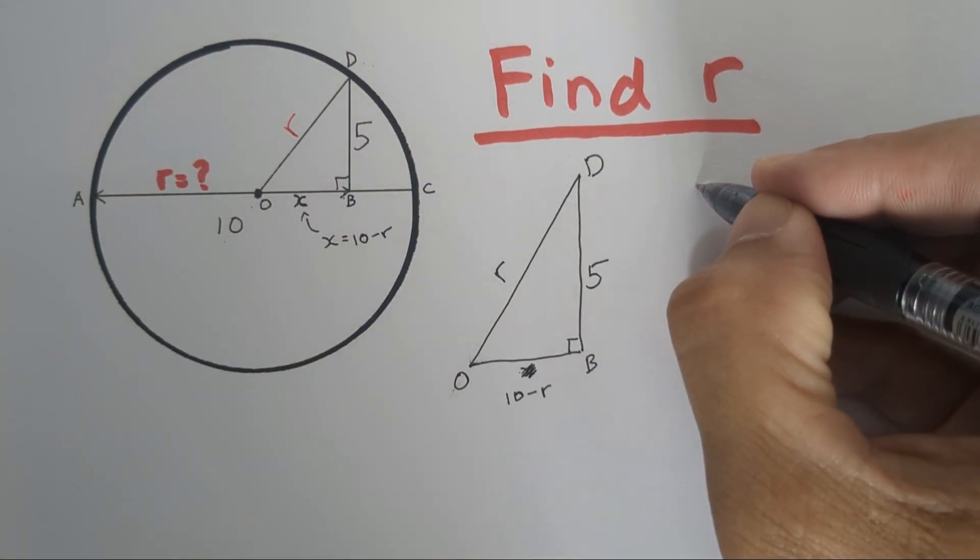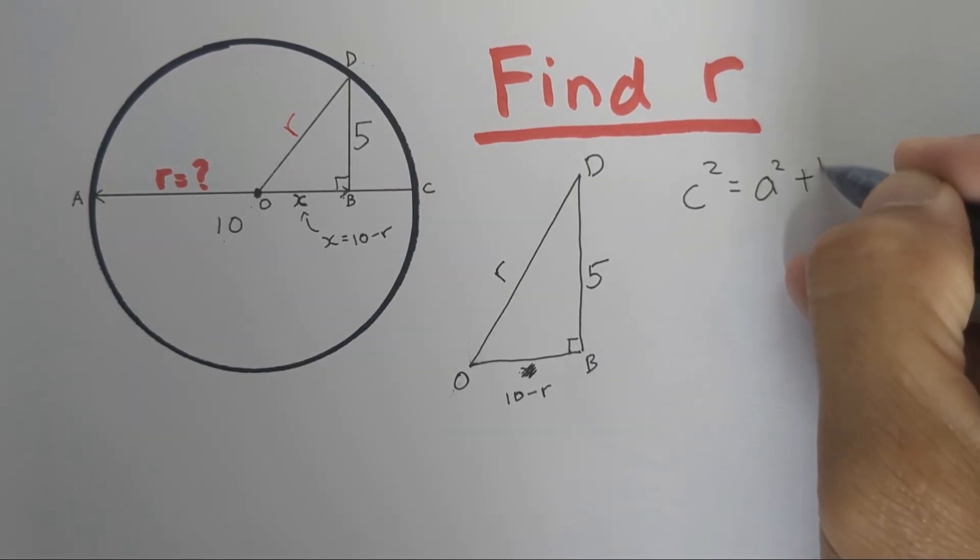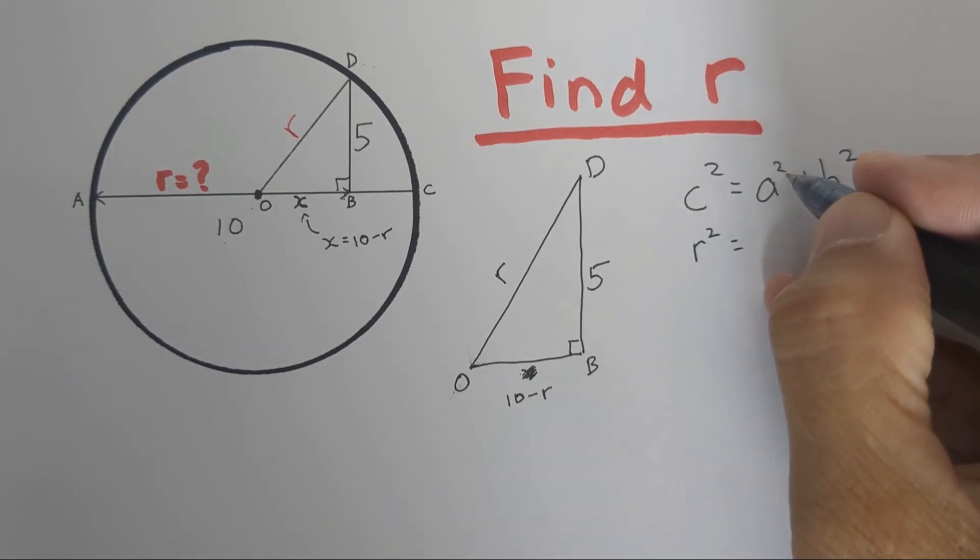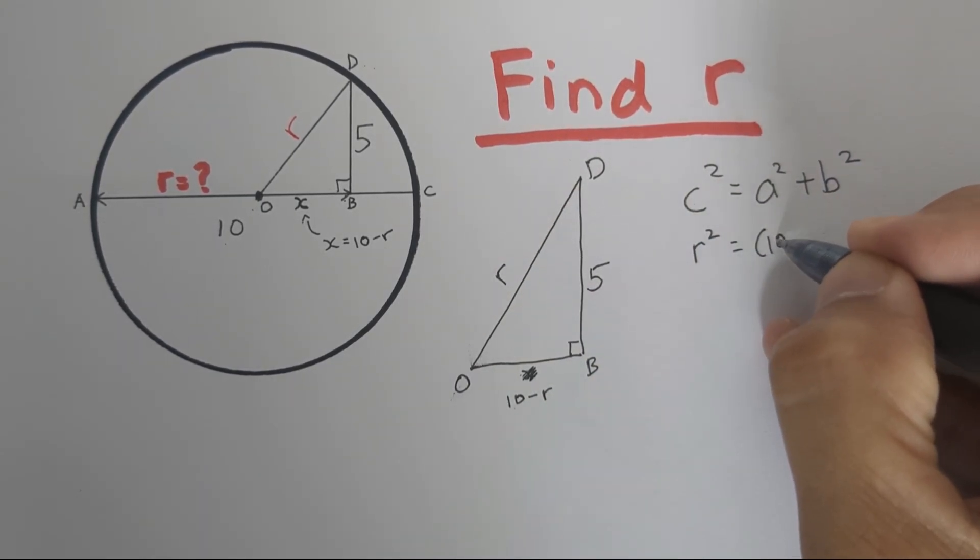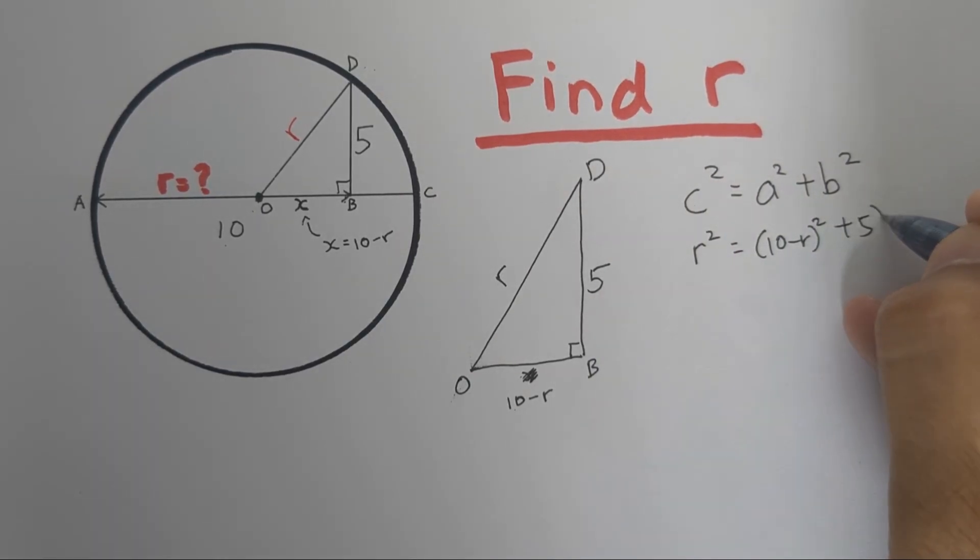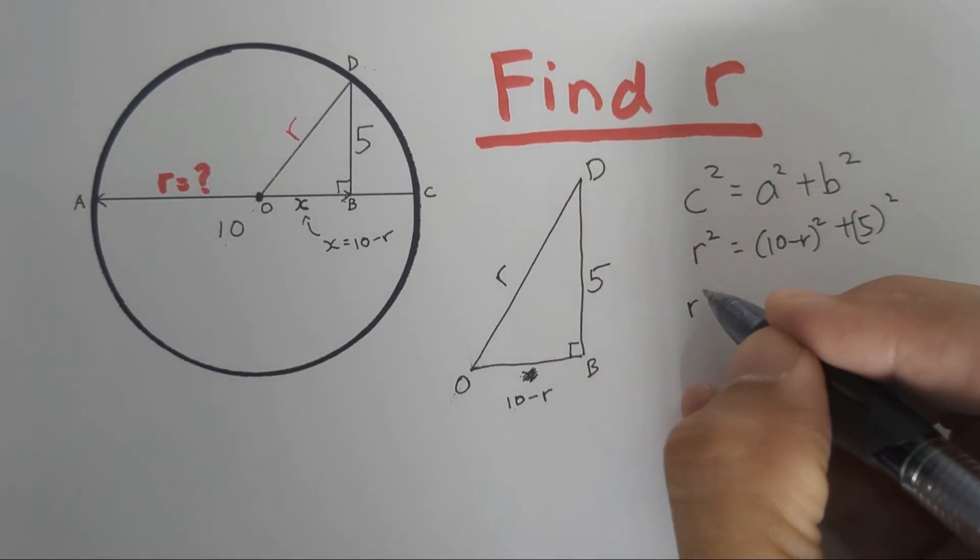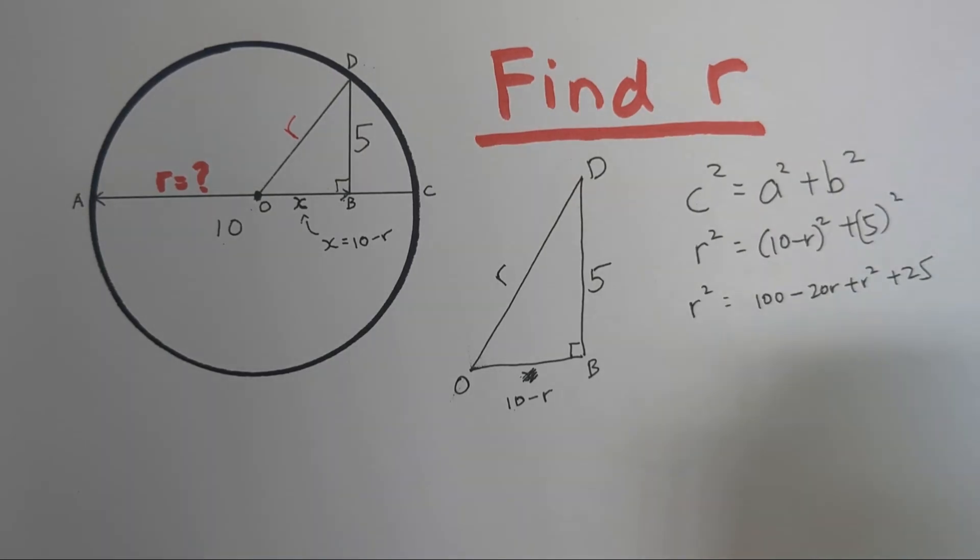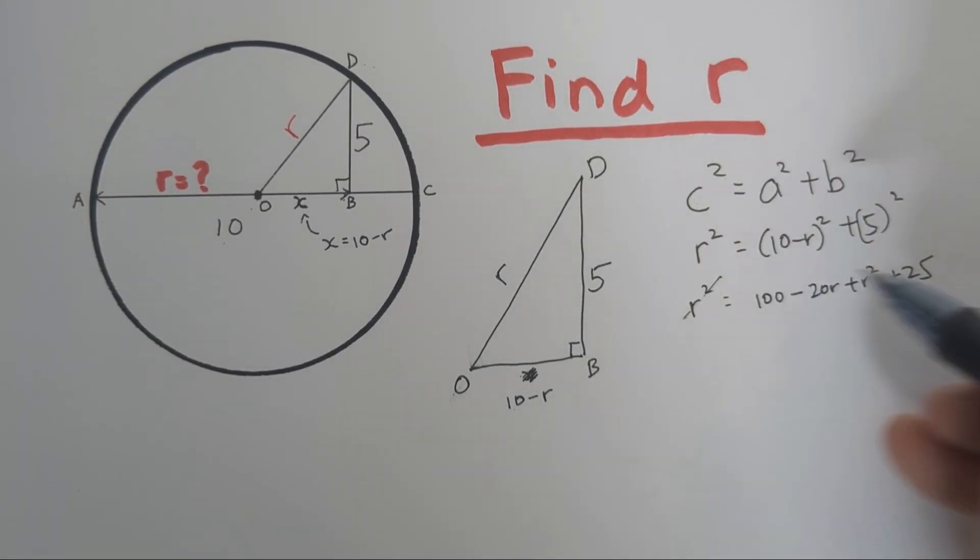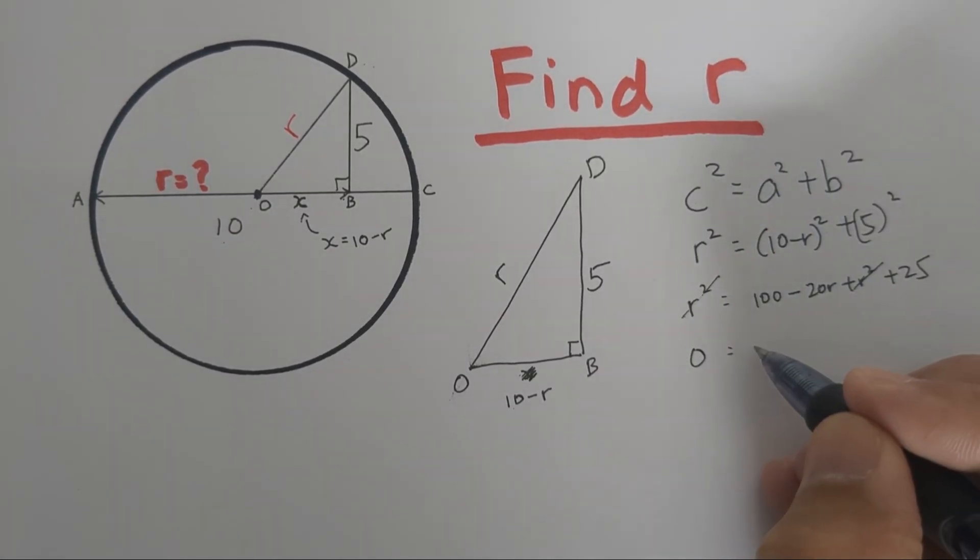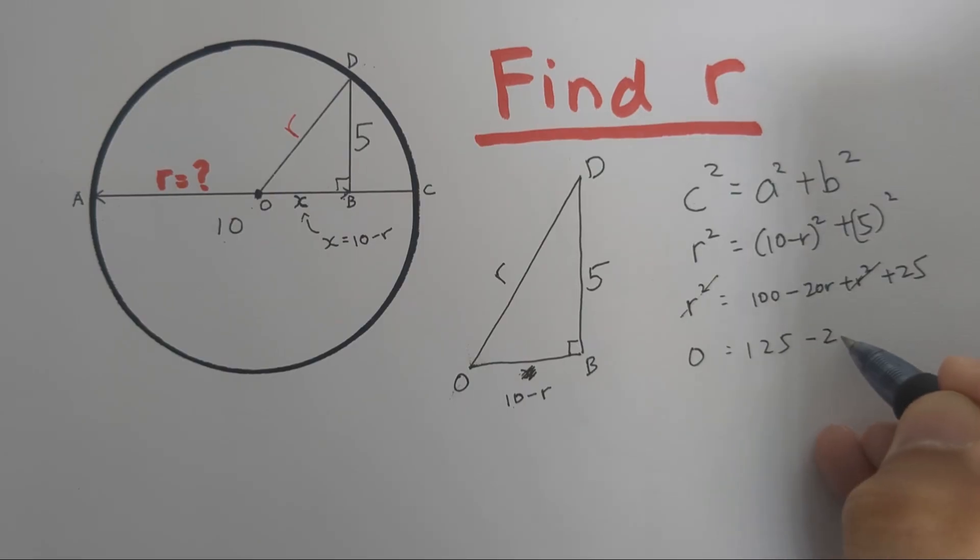The Pythagorean theorem says C squared equals A squared plus B squared. C is R. A is 10 minus R. B is 5. We expand it. R squared equals 100 minus 20R plus R squared plus 25. Cancel the R squared. So we have 0 equals 125 minus 20R.